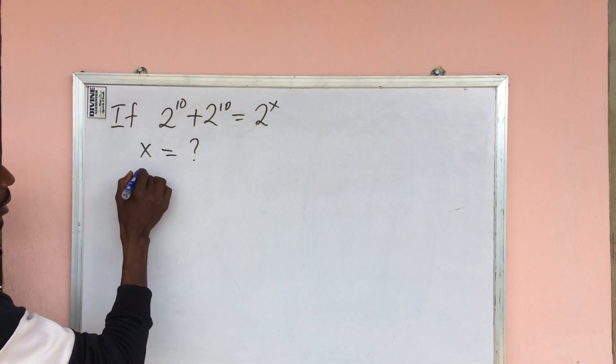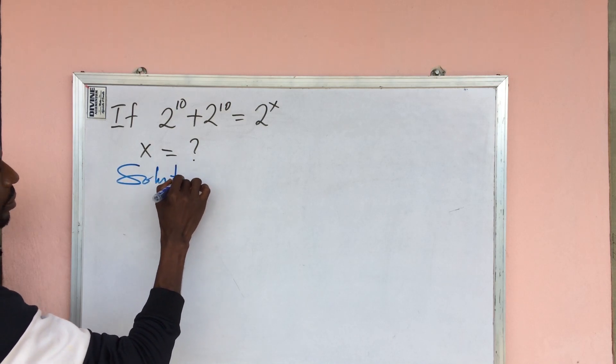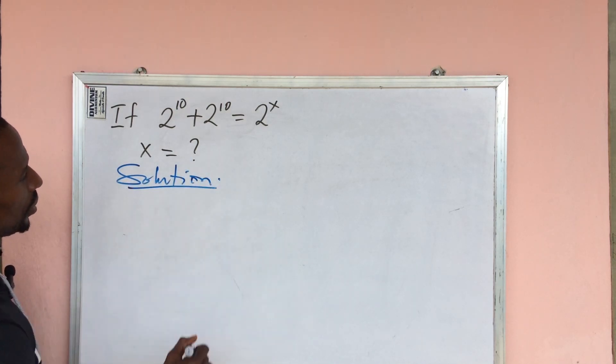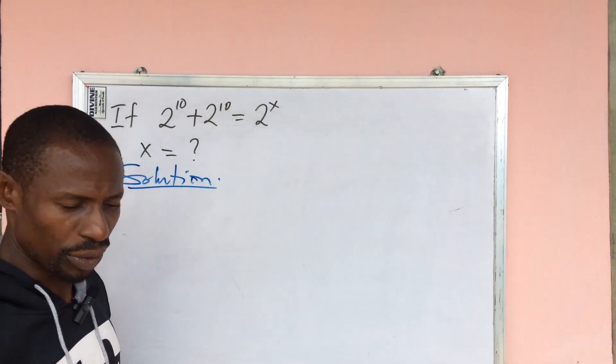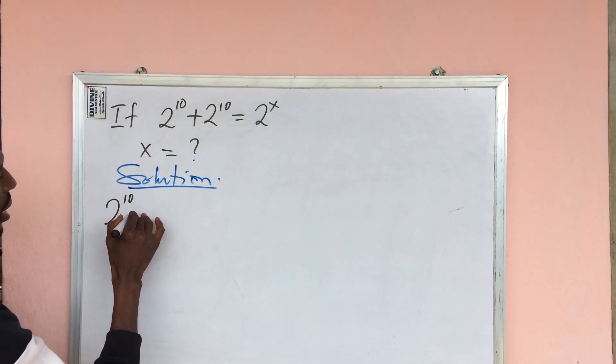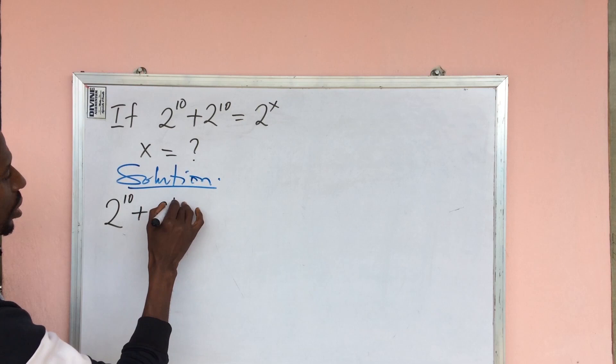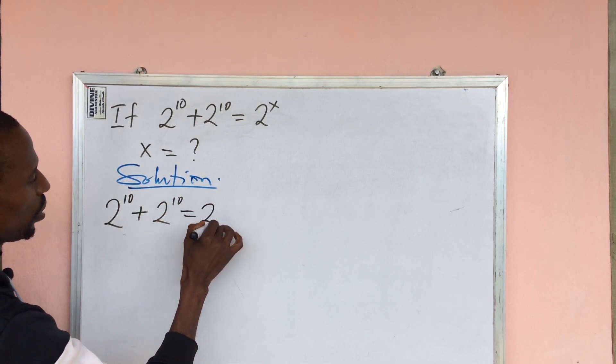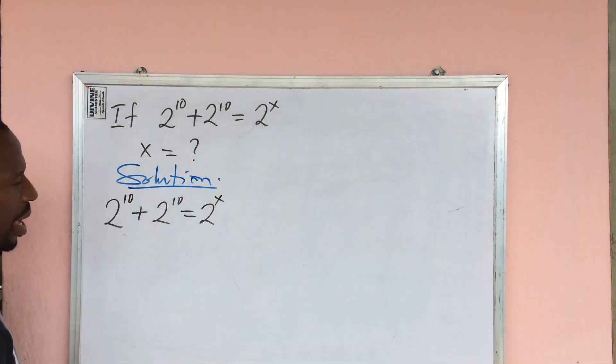Let's take down our equation which says 2 to the power of 10 plus 2 to the power of 10 equal to 2 to the power of x. How do we solve this?